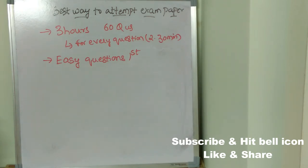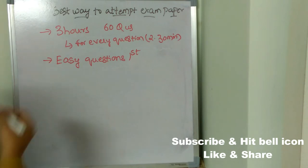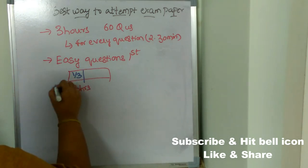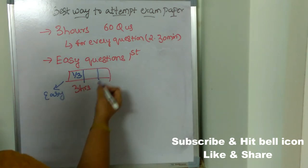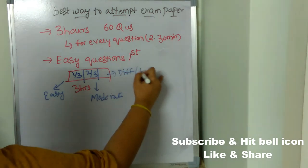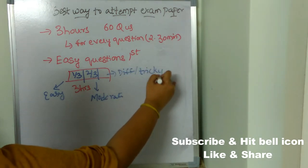In the given three hours, in the first one-third of the time, concentrate on easy questions. In the next part of the time, concentrate on moderate questions. And in the last part, concentrate on difficult and tricky questions. This is the attempting technique.